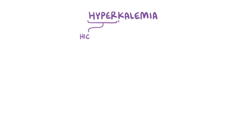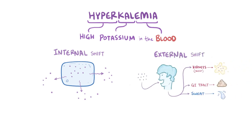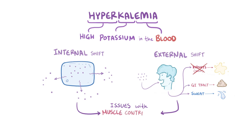As a quick recap, hyperkalemia describes a high concentration of potassium in the blood, which can result from shifts in internal potassium balance where potassium moves out of the body's cells, as well as external potassium balance problems — having to do with potassium intake and the kidneys' ability to regulate its excretion. Either way, the high potassium leads to issues with muscle contractions, affecting smooth, skeletal, or cardiac muscles.